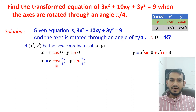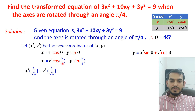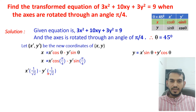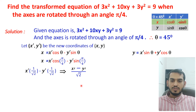So x = x'cos(π/4) − y'sin(π/4). Since cos(π/4) and sin(π/4) are both equal to 1/√2, we can write x = x'·(1/√2) − y'·(1/√2). Since the denominator is the same, this becomes x = (x' − y')/√2.